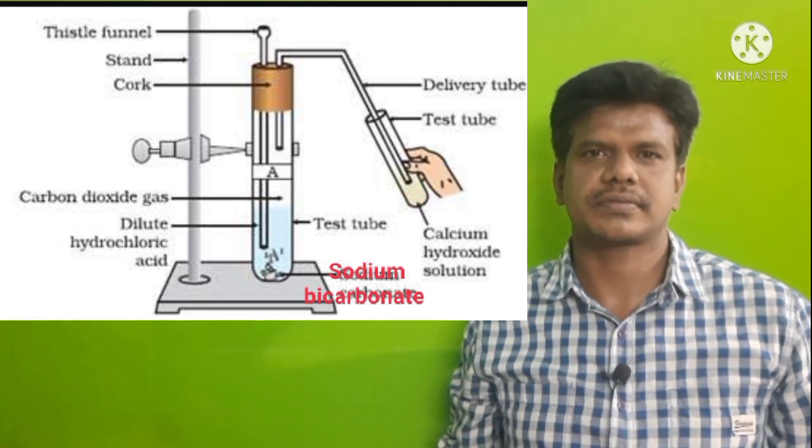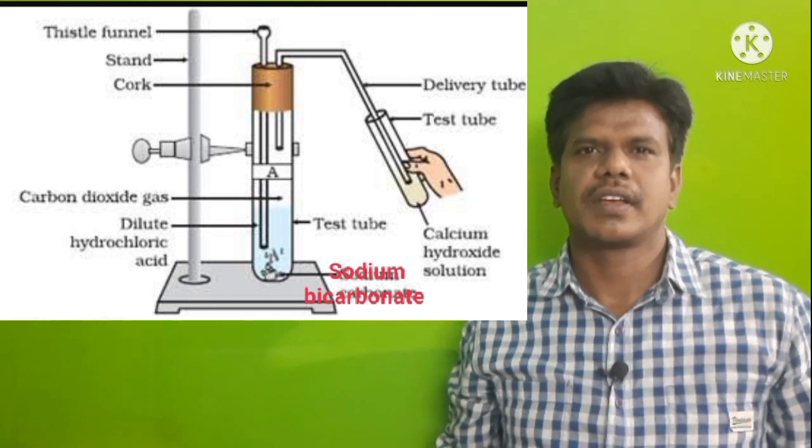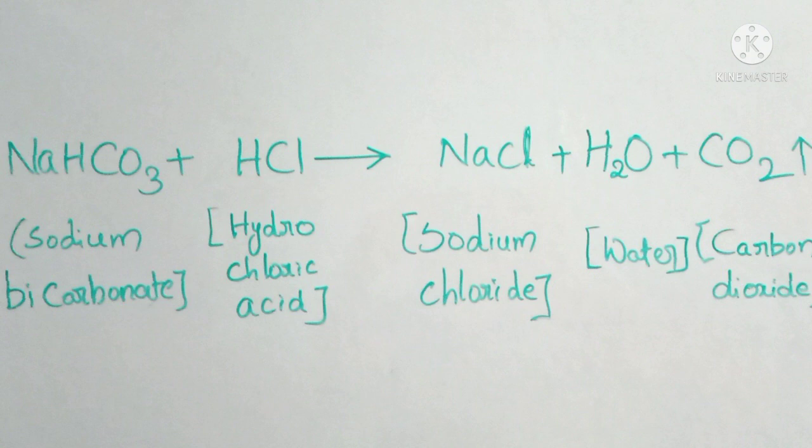The reaction for test tube B is: HCl + NaHCO3 → NaCl + H2O + CO2 gas. From both reactions we can say that when acids react with metal carbonates and metal hydrogen carbonates, it releases carbon dioxide gas.